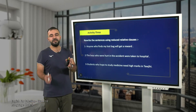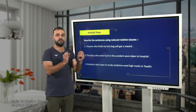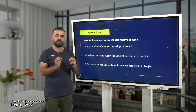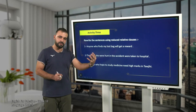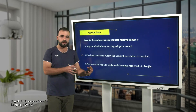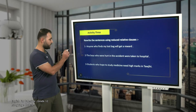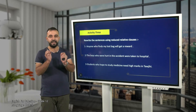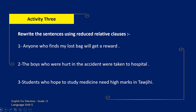As you have studied reduced relative clauses, we have two types: the active reduced relative clauses and the passive reduced relative clauses. Please read these three sentences and try to rewrite them using the reduced relative clause. Take two minutes.